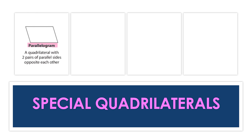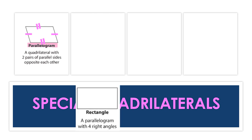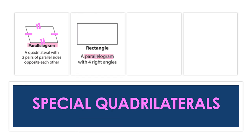Let's take a closer look at special quadrilaterals that we can also name parallelograms. Any quadrilateral with two pairs of parallel sides opposite each other can be named a parallelogram. Rectangles can be named parallelograms — they, too, have two pairs of parallel sides opposite each other. But they also have an additional unique attribute of four right angles. We call a corner a right angle if we can visualize a little square fitting perfectly inside.